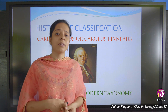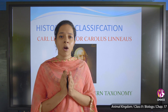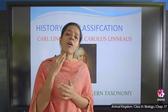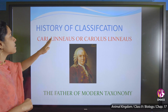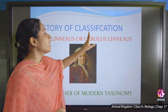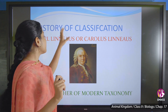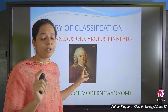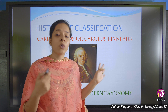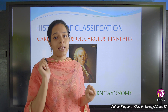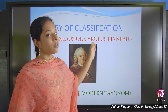Now let us know the history of classification. The author Carl Linnaeus, also called Carolus Linnaeus, was the first author who classified taxonomy. He is called the father of modern taxonomy. Both Carl Linnaeus and Carolus Linnaeus refer to the same person.